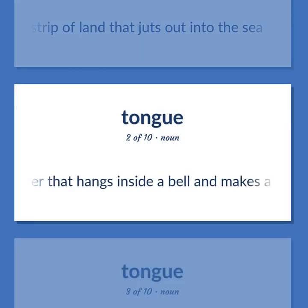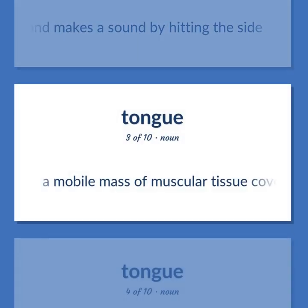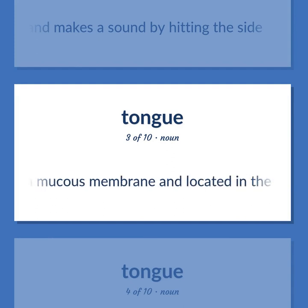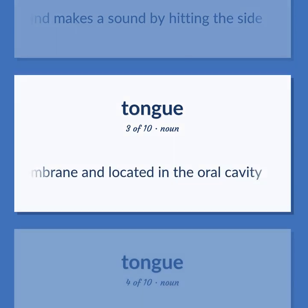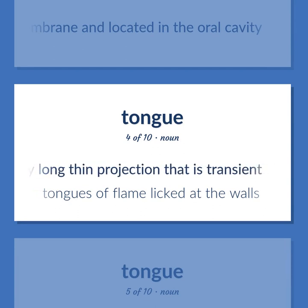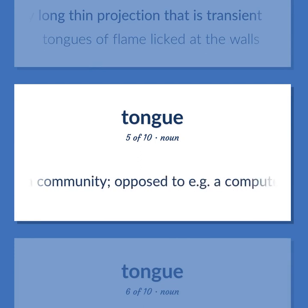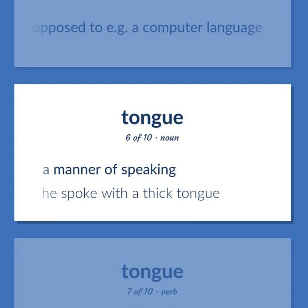Metal striker that hangs inside a bell and makes a sound by hitting the side. A mobile mass of muscular tissue covered with mucous membrane and located in the oral cavity. Any long thin projection that is transient — 'Tongues of flame licked at the walls.' A human written or spoken language used by a community, as opposed to a computer language. A manner of speaking — 'He spoke with a thick tongue.'